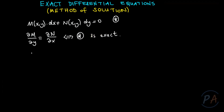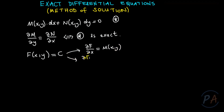If this equation is exact, that means it has a solution of the form f(x,y) = c, where c is a constant, satisfying that the partial derivative of f with respect to x is M(x,y), and the partial derivative of f with respect to y is N(x,y). We will use this as our solution algorithm, starting with either the first or the second equation.